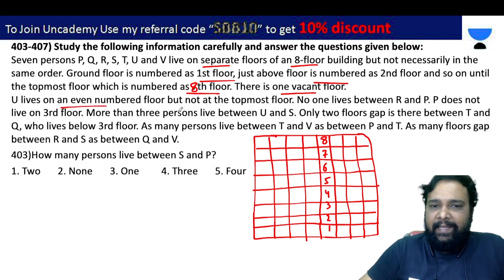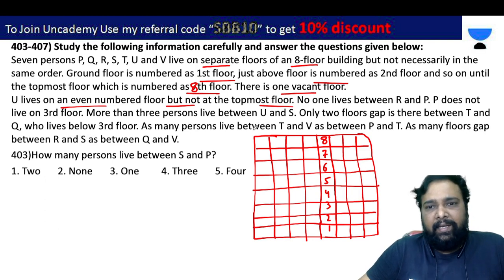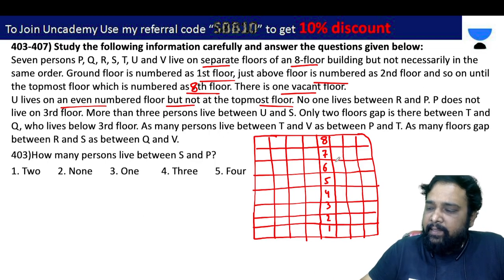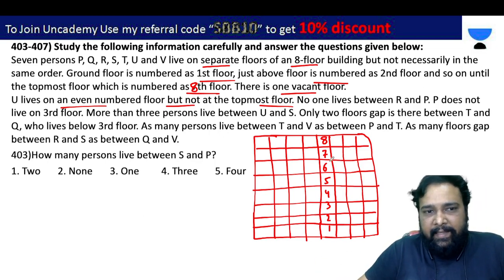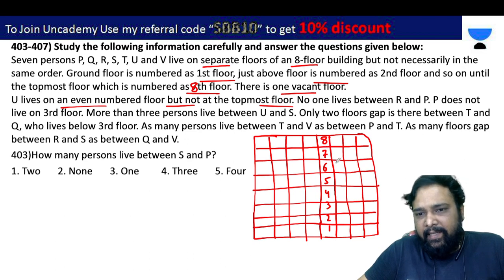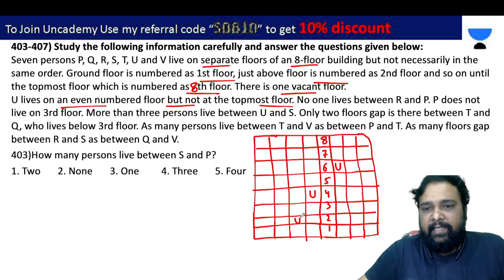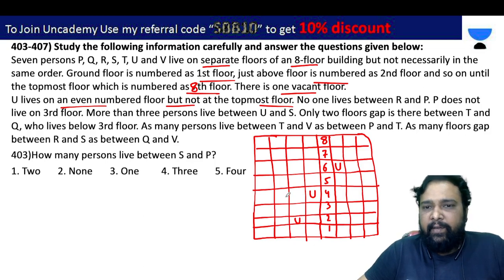U lives on an even-numbered floor but not on the topmost floor. The 8th floor is not for U. So we have three possibilities: 6th floor, 4th floor, and 2nd floor. So the 8th floor is not a chance for U.